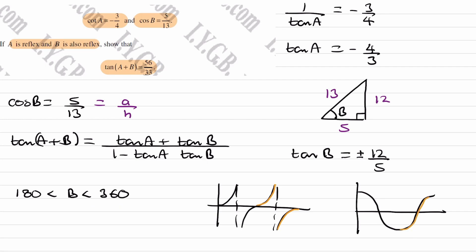which will be this interval here. If cos B is positive, then we must be in this part of the graph here, between 270 and 360. So yes, B is between 180 and 360, but more specifically is between 270 and 360.